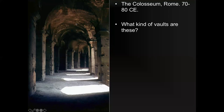If you look upwards, you can guess what kind of vaults these are. We have barrel vaults going one way and a long barrel vault going the other way, but when they meet in the middle it's a groin vault. You can see the X-axes on the ceiling from that.